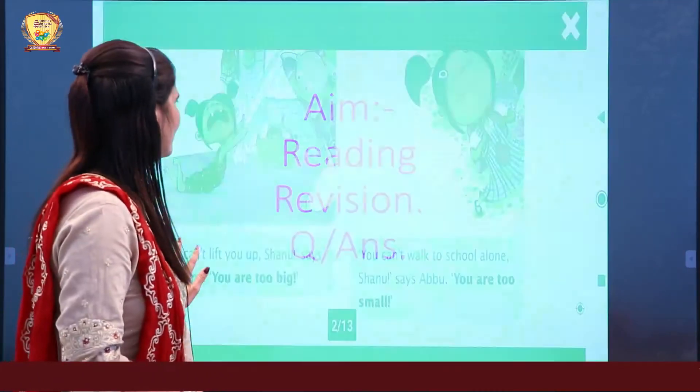Question number 3: Why was Shanu puzzled? Ab to sabko pata hai — Shanu was puzzled while thinking how she can be too big and too small all at once. Shanu puzzled thi ki ek hi time par wo choti aur badi dono kaise ho sakti hai.